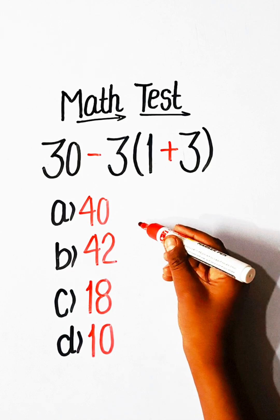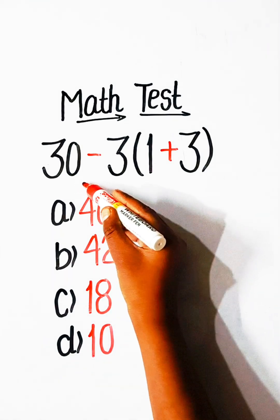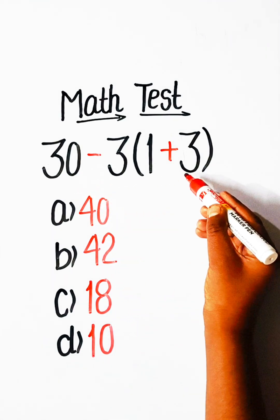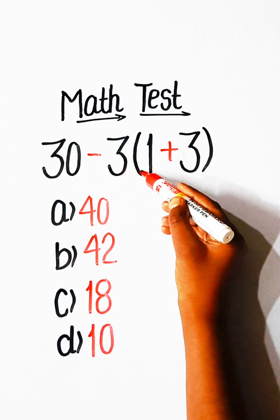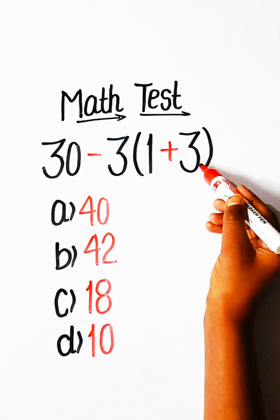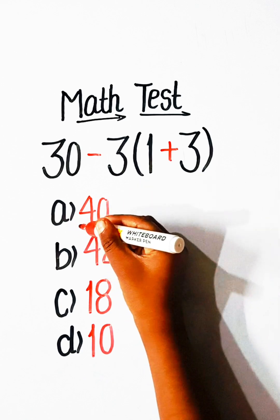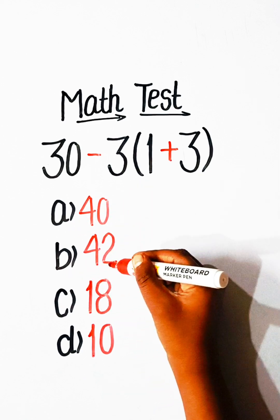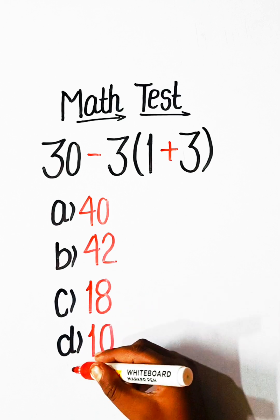Hello everyone, welcome back to my YouTube channel. In this video, we will solve this math expression: 30 minus 3 under bracket 1 plus 3. What does it equal to? Option A: 40, Option B: 42, Option C: 18, or Option D: 10.